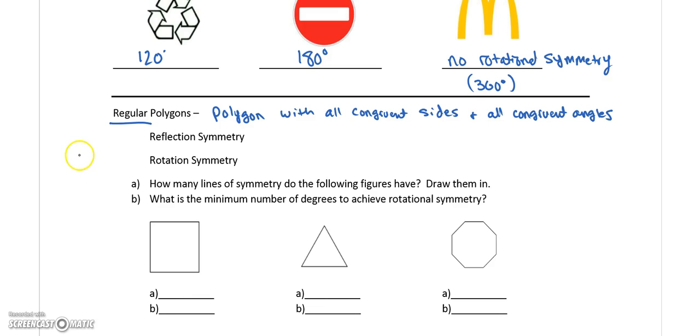To find each of these, so reflection symmetry, this should actually say the number of lines of symmetry. Actually this one's easy. This will be equal to the number of sides. However many sides your regular polygon has, that's the number of lines of symmetry that you can have. So let's go through and do that for each of these.